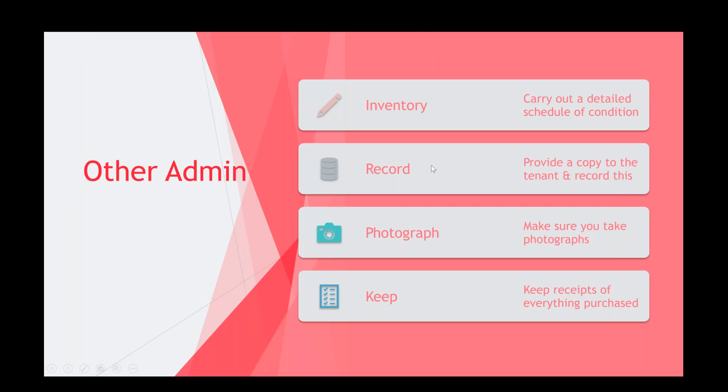Other admin is particularly important when it comes to dealing with the return of the deposit. Carry out a detailed schedule of condition — an inventory — at the start of the tenancy, go through it with the tenant, give them appropriate time to raise amendments, and take plenty of photographs. Record that you have provided the tenant a copy and that they've had sufficient time to raise concerns. You need to keep receipts for everything you purchase. If you buy a brand new cooker, for example, having the receipt confirms it was new if you need to make a claim.